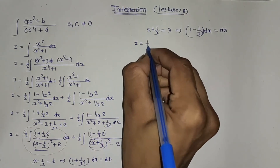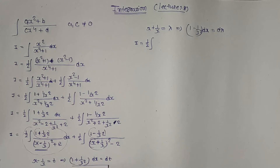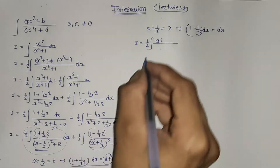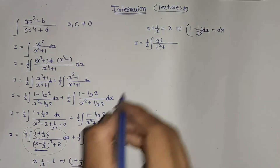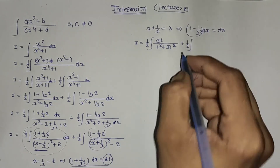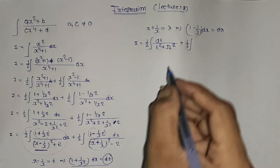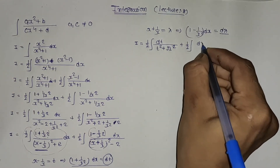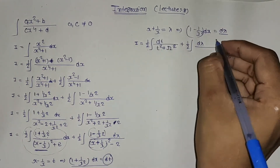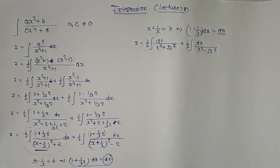Now I equals one-half integration of dt divided by (t² + (√2)²), plus one-half integration of dλ divided by (λ² - (√2)²). These are standard forms giving: (1/(2·√2)) · (1/√2) · tan⁻¹(t/√2) plus (1/2) · (1/(2√2)) · log|( λ - √2)/(λ + √2)| + C.